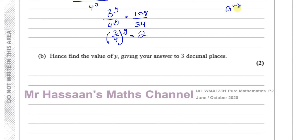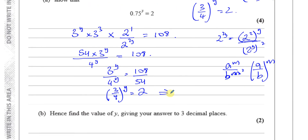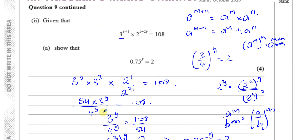I can write 3 to the power of y over 4 to the power of y as (3 over 4) to the power of y, because a to the power of m over b to the power of m equals (a over b) to the power of m — you can write them as separate powers or as one fraction to one power. So therefore we can say 0.75, which is three-quarters, to the power of y equals 2. That's exactly what they wanted us to show — just use the laws of indices to split it up.